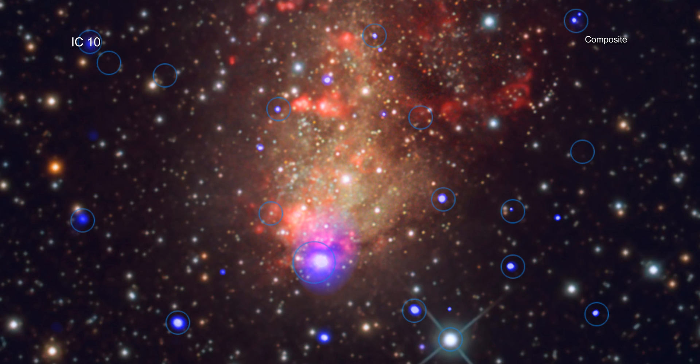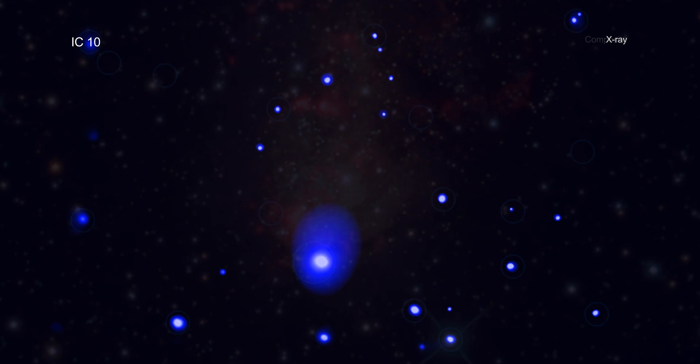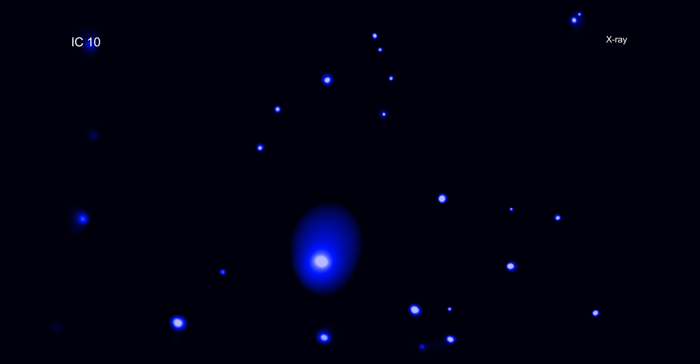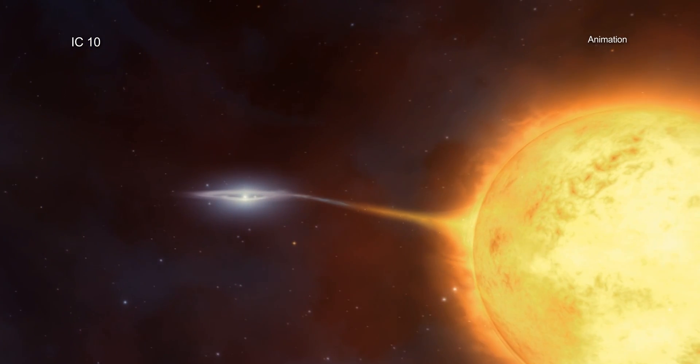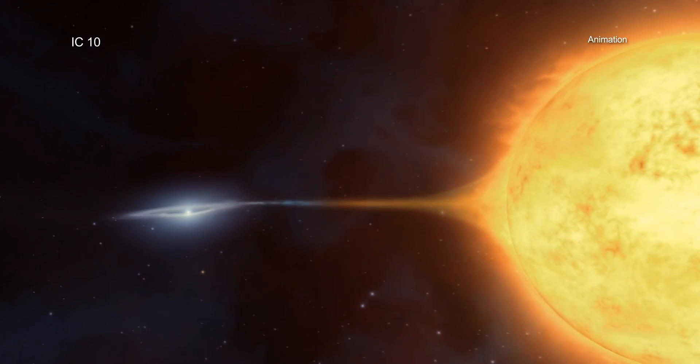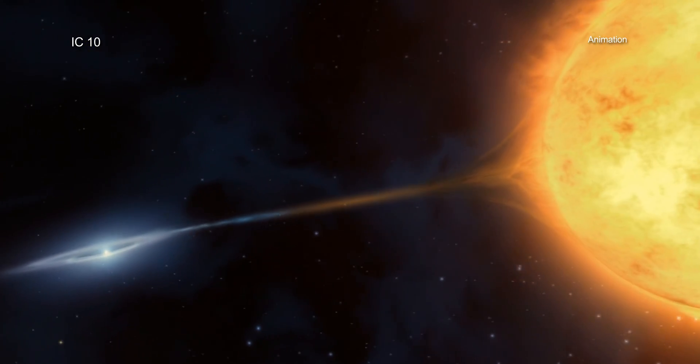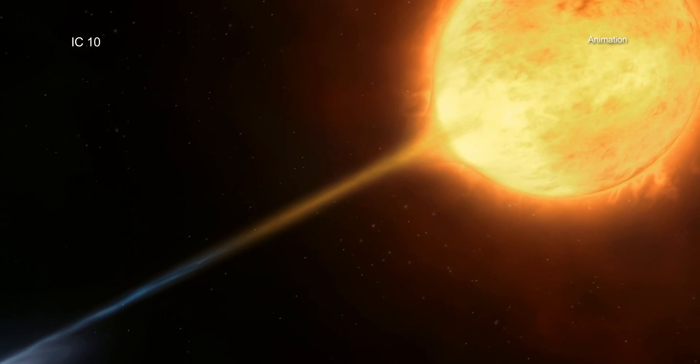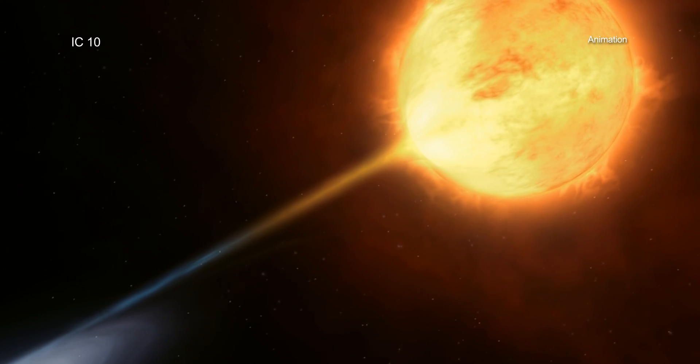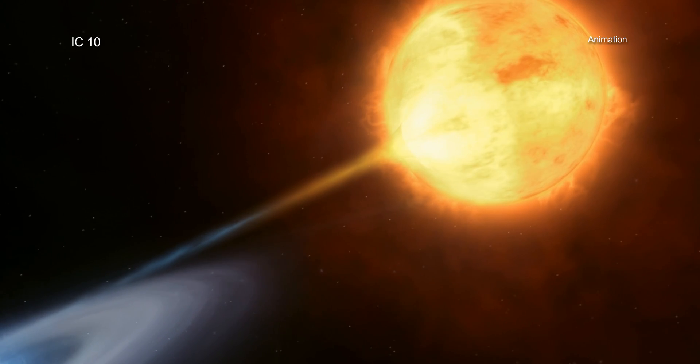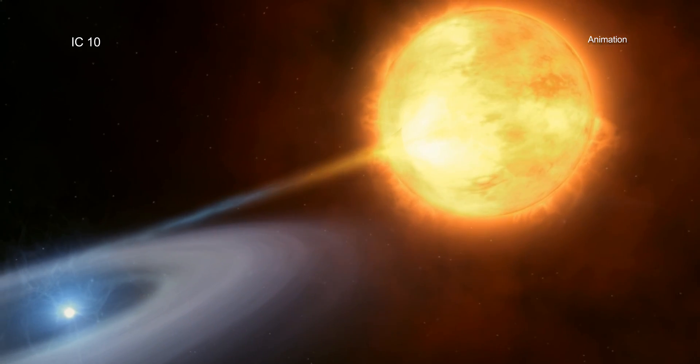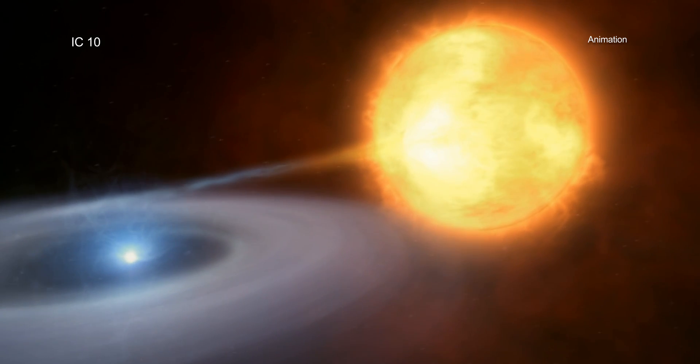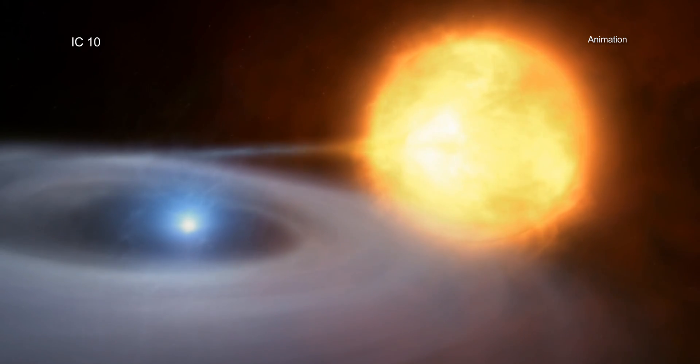Such double star systems are known as X-ray binaries because they emit large amounts of X-ray light. As a massive star orbits around its compact companion, either a black hole or neutron star, material can be pulled away from the giant star to form a disk of material around the compact object. Frictional forces heat the infalling material to millions of degrees, producing a bright X-ray source.